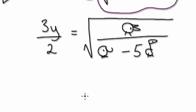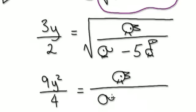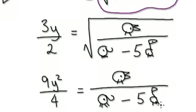Now square both sides. So this side would be nine y squared over four. This side would be chicken over elephant, take away five giraffes.